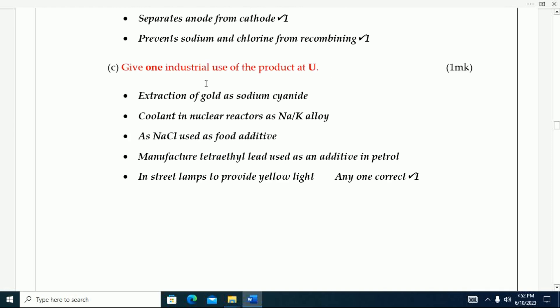Give one industrial use of product U. Extraction of gold as sodium cyanide. Coolant in nuclear reactors as sodium. As sodium chloride used as a food additive. Manufacture of tetraethyl lead used as an additive in petrol. In street lamps to provide yellow light.